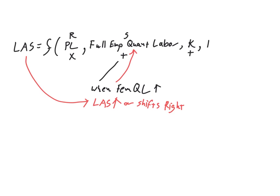Also, technology is a shift factor. An increase in technology will also shift long-run aggregate supply to the right — they move together. Our final shift factor is natural resource stock, which is also directly related to LAS. To improve an economy in a long-run, meaningful, sustainable way, what must be addressed is the full employment quantity of labor, the capital stock, the value of productive resources at work in the economy, the state of technology, or access to natural resources.